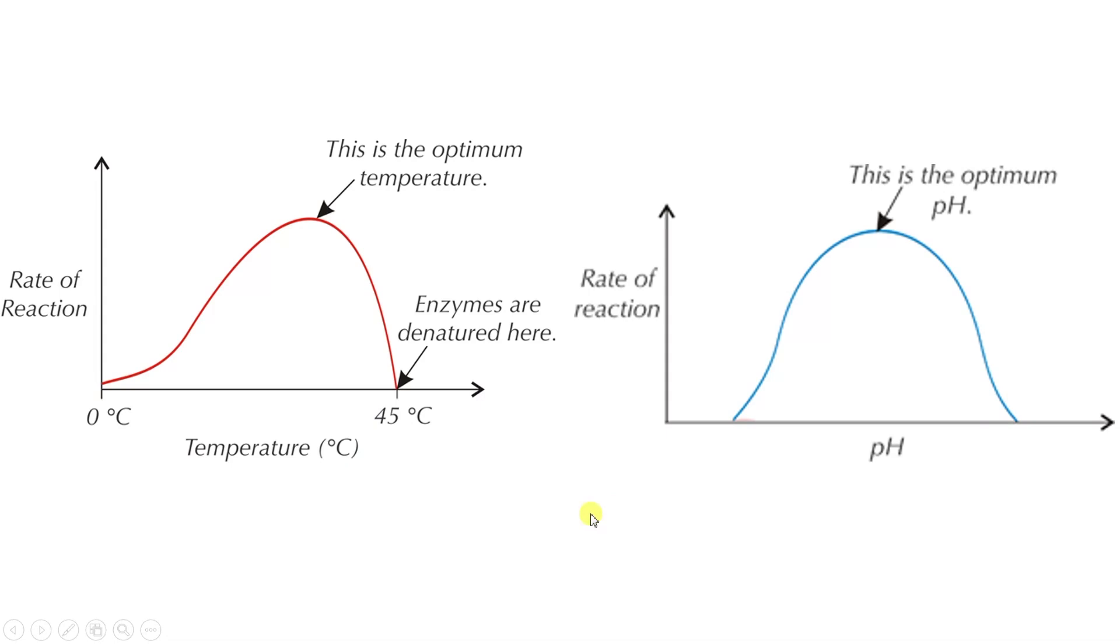So you can see this happening in graphs, and this is usually how they're going to present it to you in the exam as well. So they're not very scary as long as you know what's going on. The one on the left is all to do with temperature, and you can see as the temperature rises down here at the bottom—temperature in degrees Celsius—so does the rate of the reaction. So it's reaching this optimum point at the top here, the optimum point where the rate of reaction is the highest.